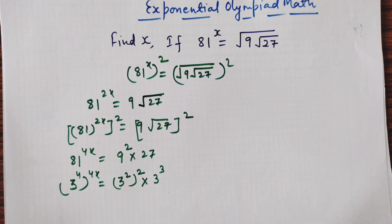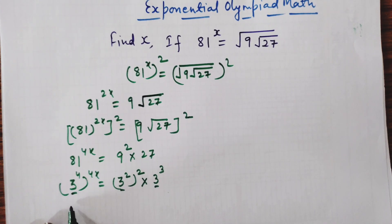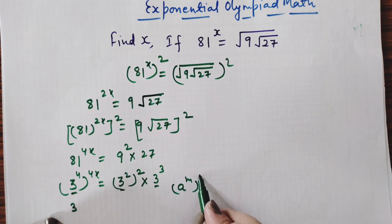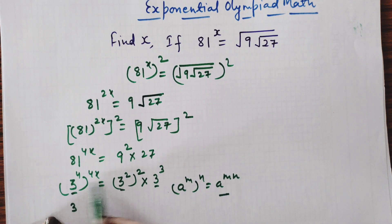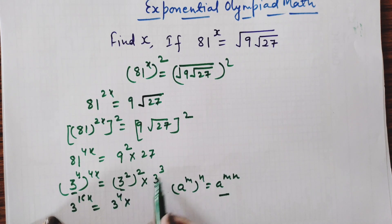So now you can see left-hand side and right-hand side bases are all 3. We are using the law of exponents: a power m whole power n — power to power, they multiply — so we get a power m×n. Applying this law here: on the left, 4 × 4x gives 16x, so we have 3 power 16x. On the right, 2 × 2 gives 4, so we have 3 power 4. And for 27 = 3³, that remains 3 power 3.